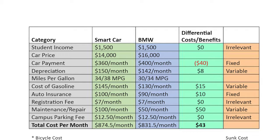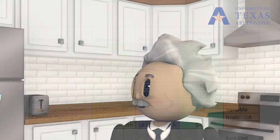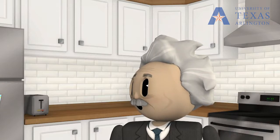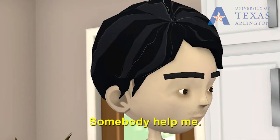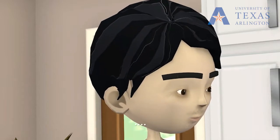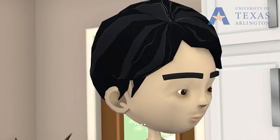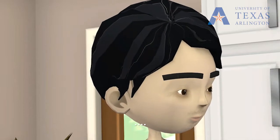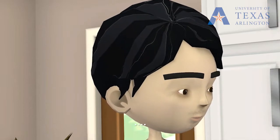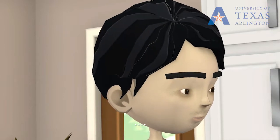Let's take a look at your monthly income, which is $1,500. If you look at the car payment, you will be paying $360 per month for the smart car and $400 per month for the BMW. Then there's car depreciation — that's the value that goes down every year. If we divide that yearly value by 12, we get $150 per month for the smart car and $142 for the BMW. In terms of gasoline cost, that will be $145 per month for the smart car and $130 per month for the BMW.